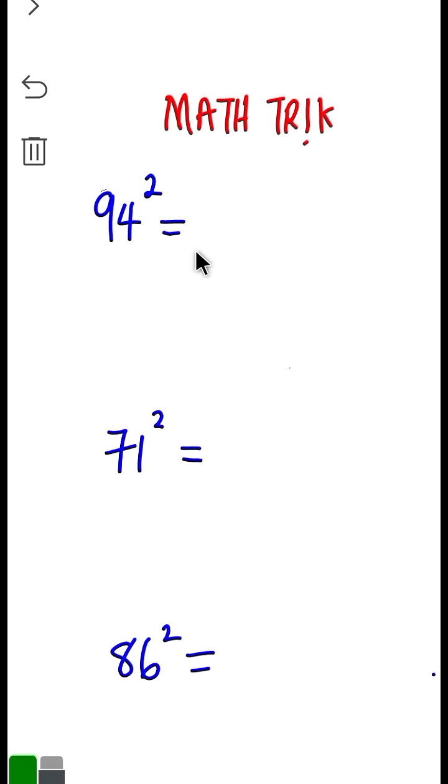This is a simple trick. 94 squared: 9 squared is 81, 4 squared is 16.